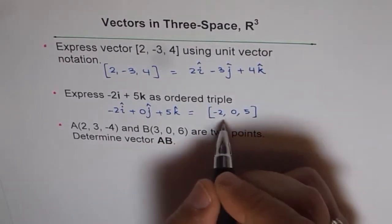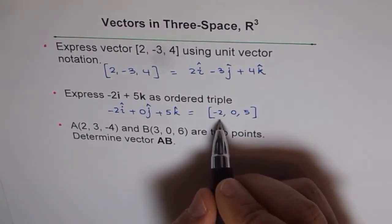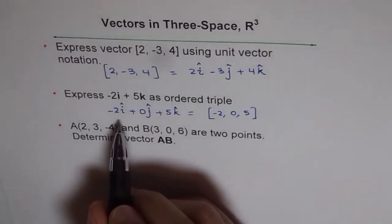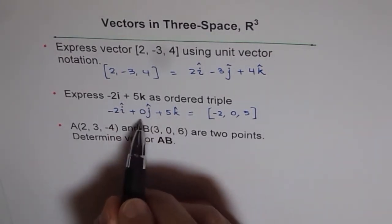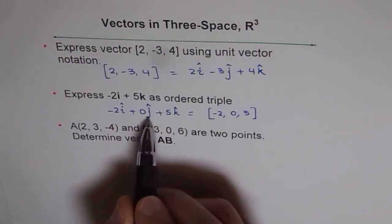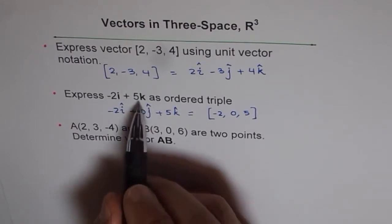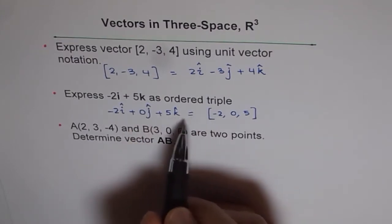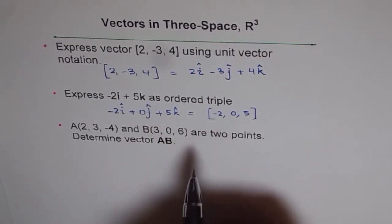In ordered triple, we have to give all three direction numbers. But when we write in unit vector form, then writing 0j is redundant, so we never write like that. I only have written here to show you how to express it in a different form.